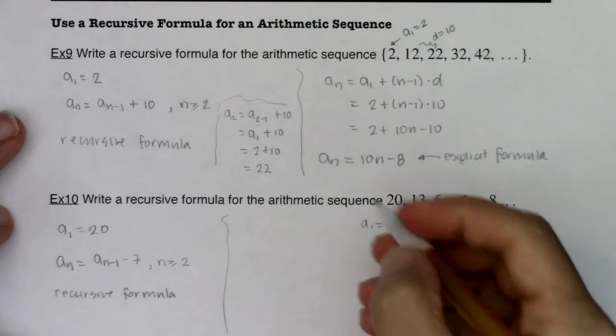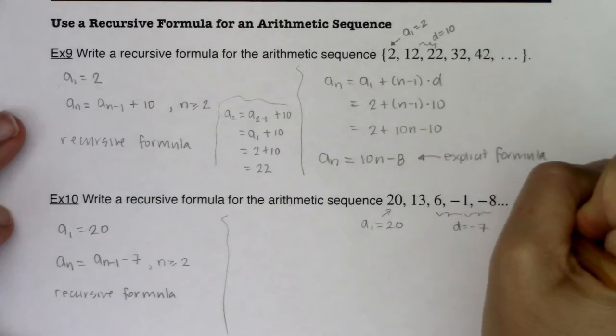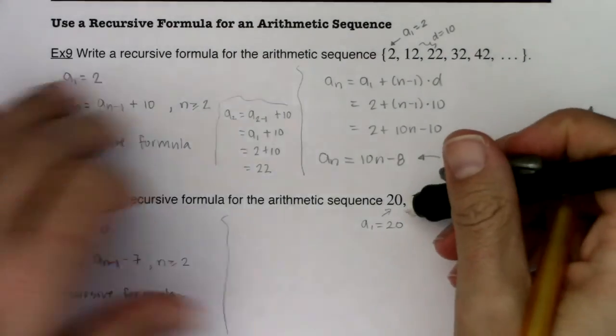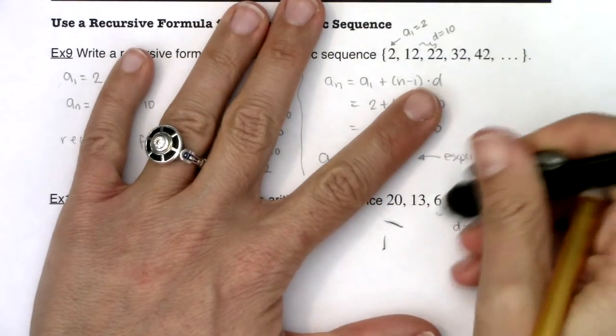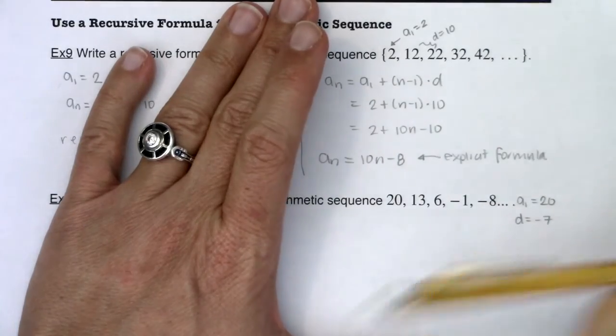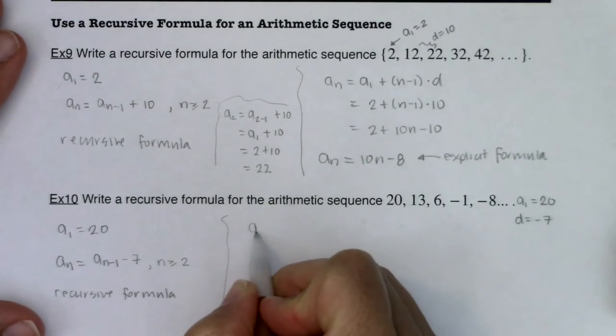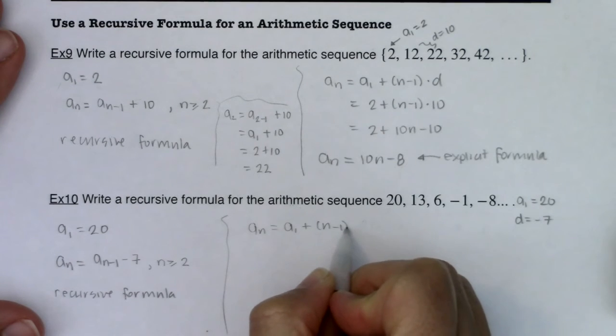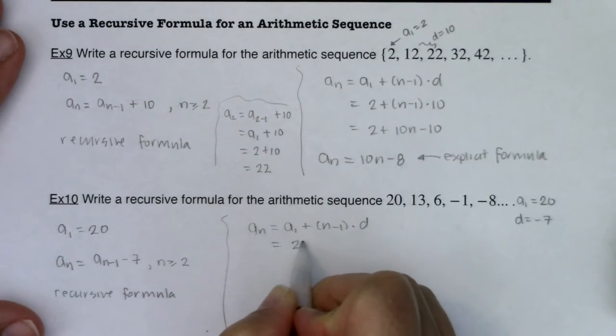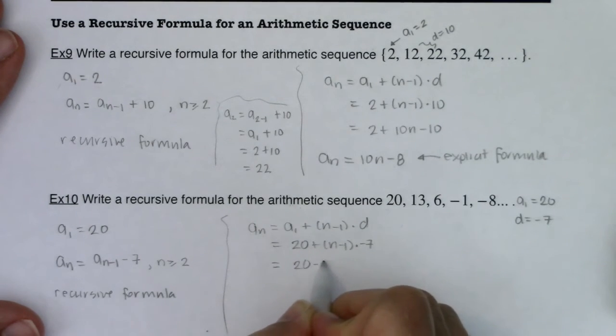So this is the recursive formula. Now to contrast that, I'm going to write this off to the side. So a sub 1 was 20 and d was negative 7. Let me give myself some space here. If I wanted to write it explicitly, and again I wasn't asked to write it explicitly, I just want you to see the options. I could have done a sub n is equal to a sub 1 plus n minus 1 times d. So in this case that would be 20 plus n minus 1 times negative 7. If I distribute that a little, I've got 20 minus 7n plus 7. So I've got a sub n equaling, it looks like 27 minus 7n.